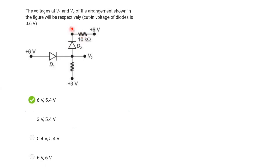Since the potential difference across the 10kΩ is 0, V1 minus 6 equals 0, so V1 equals 6V. D1 diode is forward biased, so there is a current path through D1. The diode has a forward bias potential drop of 0.6V at the node point.